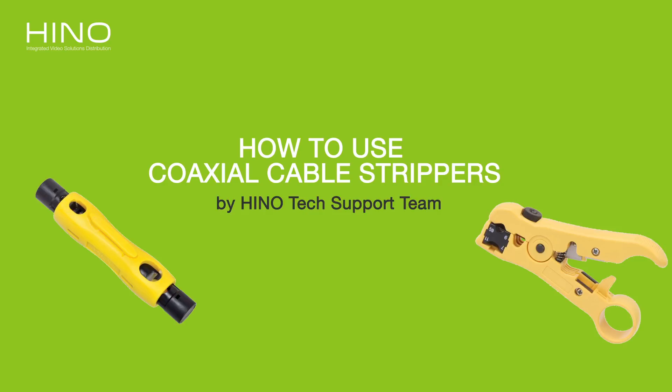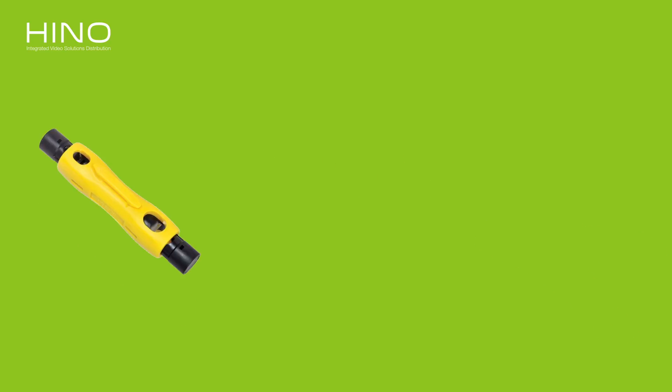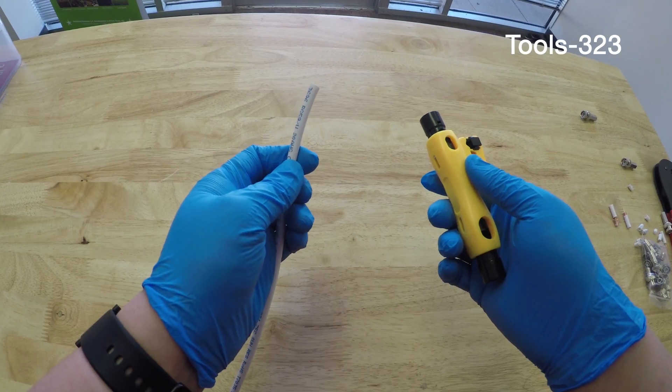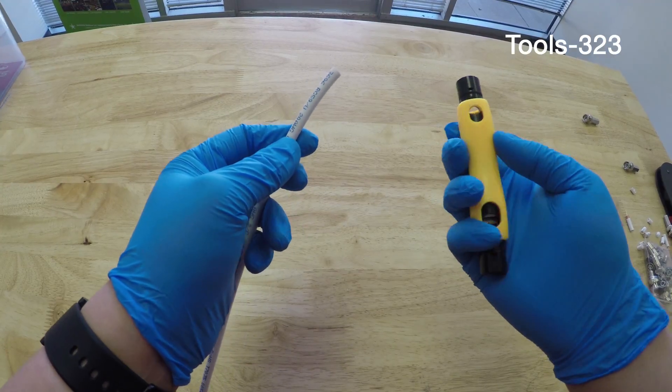Hi, in today's video we will demonstrate two different types of wire strippers. With these strippers you can strip RG59 on one end and RG11 on the other end. Now we've got an RG59 cable to strip.